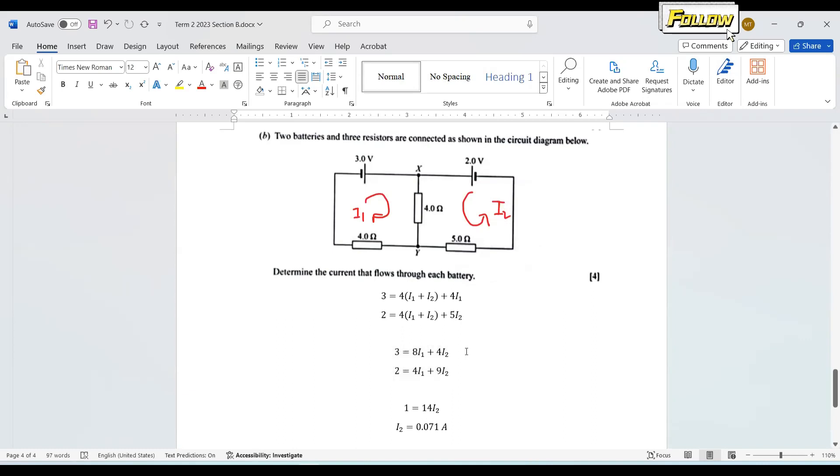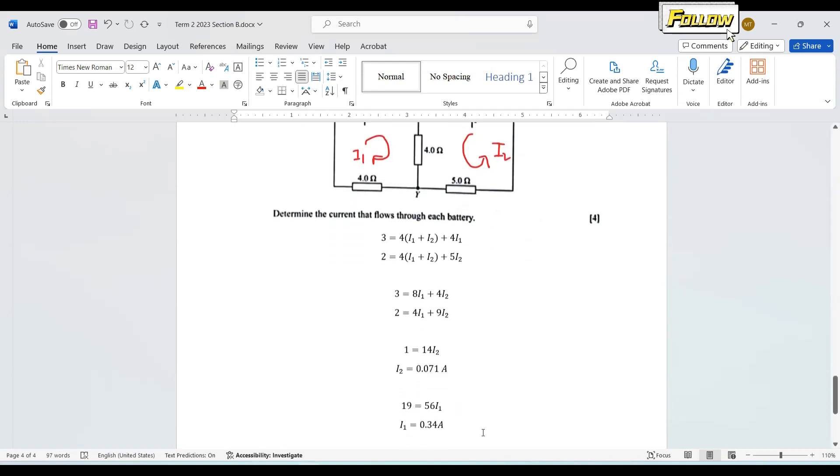So no matter how you solve this question, as long as you solve it on your own. So let me show you the answer for this question. So for i2, it is 0.071 ampere. And i1 is 0.34 ampere. So just try to solve this on your own. And you have different answer, or you still have questions about Kirchoff law, leave it in the comment section below. That's all for this question. Thank you.